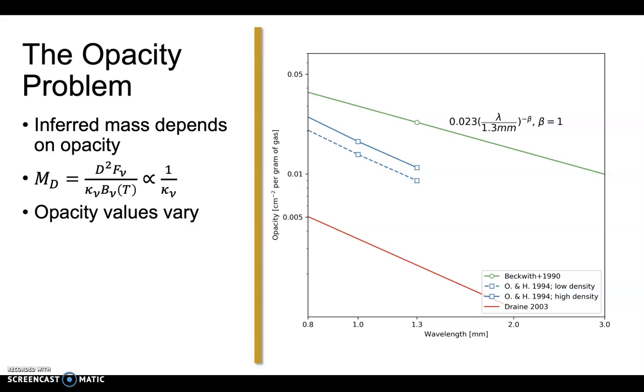This is just a subset of many opacity models. Further unknown details such as the grain shape, compositions, and size distributions make computation of opacity fairly difficult, and values can vary by an order of magnitude. Having empirical constraints on opacity is very much needed.